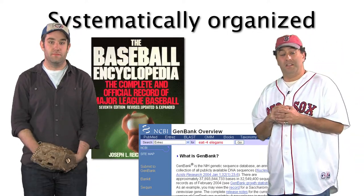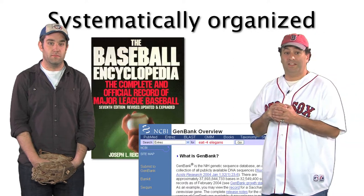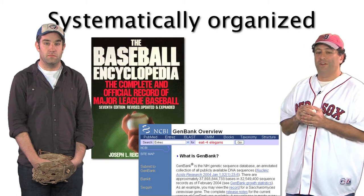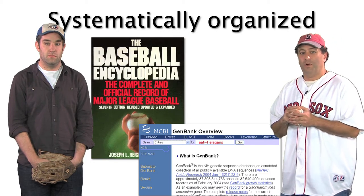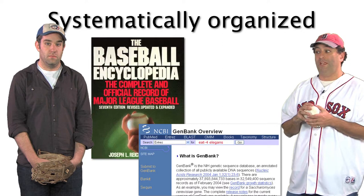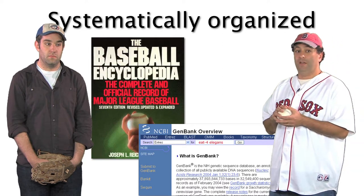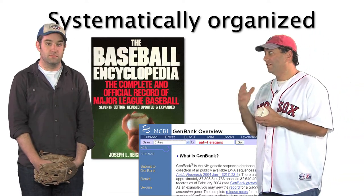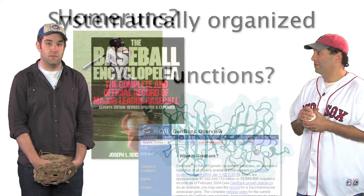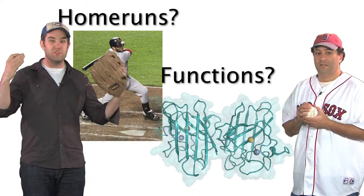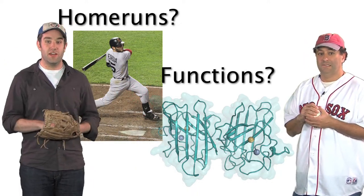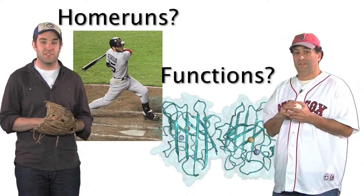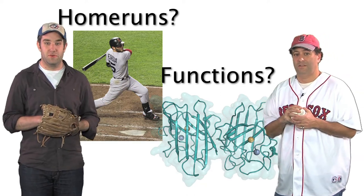It was sometime in the mid-1970s, after almost a century of collecting baseball statistics and nearly a decade of collecting DNA sequence data, that visionaries in both fields realized it would be valuable to put all this information in one place — where you could look up the past performance of any baseball player, or the DNA sequence of any gene whose sequence had been determined. So today we're going to talk about the way we use those databases to make predictions — in baseball, how many home runs Dustin Pedroia might hit, and in biology, the functions of different proteins.